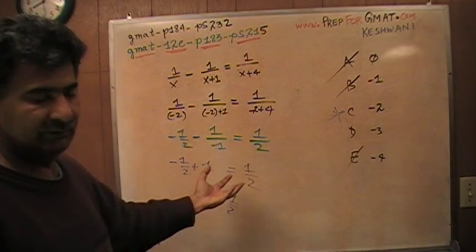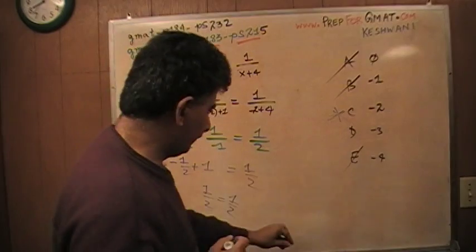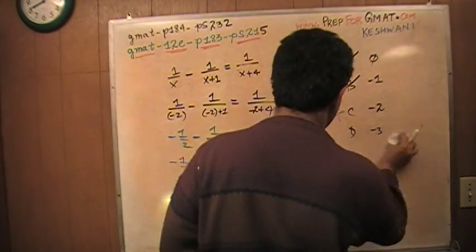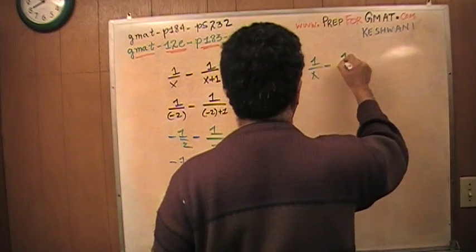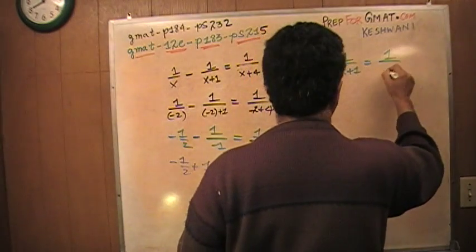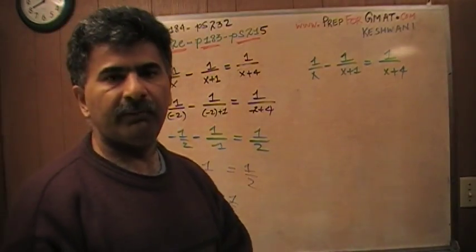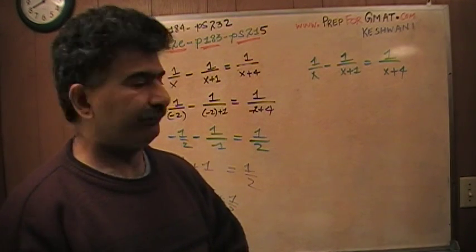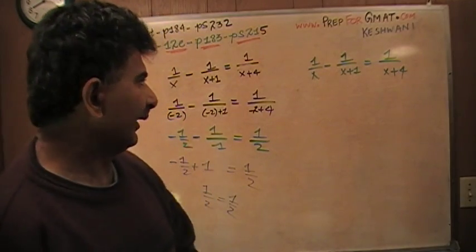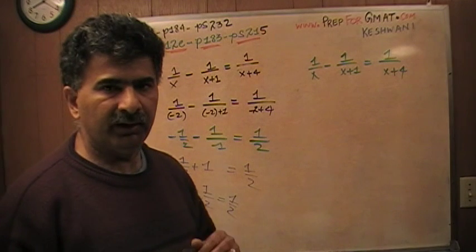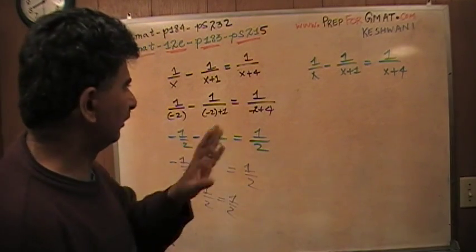Now I'm going to show you very quickly the proper way, the academic way. I need the room here, so I'm going to erase the answer choices and redo it. The algebraic way is only for those people who are very conversant, comfortable, and skilled in algebra — who can solve the problem in a timely manner and correctly. If it's taking you three or four minutes, it's worthless. And if you try to do it in two minutes and get it wrong, it's also worthless. Algebra is a tricky thing — it's not meant for everybody.